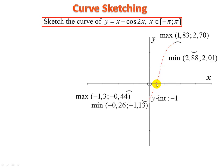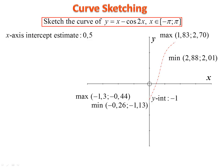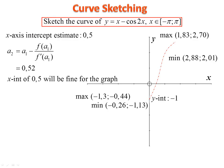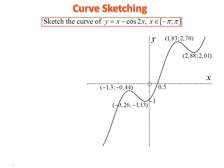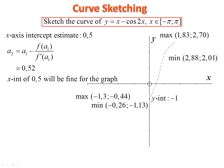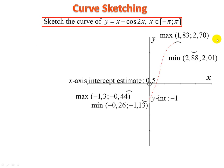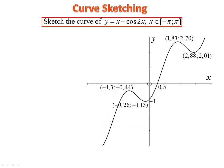Use Newton's method with estimate 0.5. Substituting 0.5 into a₁ minus f(a₁) over f′(a₁) gives 0.52, which rounds to 0.5 at one decimal place — confirmed. There is our graph: the curve passes through all the maxima, minima, the y-intercept at negative 1, and the x-intercept at 0.5.